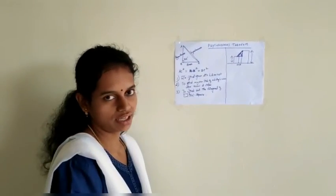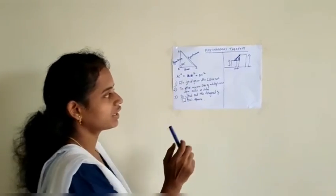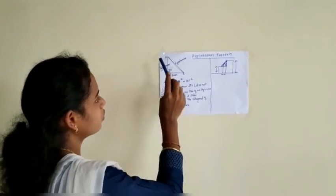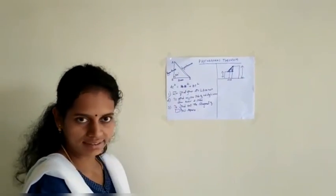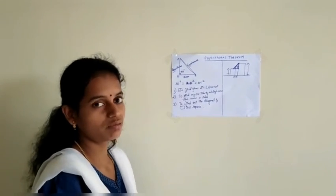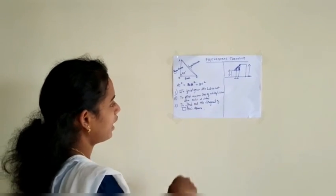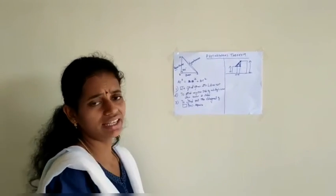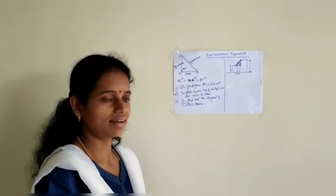What are the applications we have seen? To find whether the given triangle is a right angle triangle or not. If we know any two sides of a right angle triangle and we don't know one side, we will be implementing this theorem. And another one is to find the diagonal of a square or a rectangle.